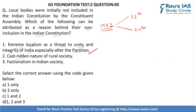Second — caste-ridden nature of rural society — is also correct, as India at that time was deeply entrenched with the caste system, especially in rural areas. Third — factionalism in Indian society — is also correct. For local self-government to be successful, it's very important that all citizens of that area live in unity and harmony, which was not the scenario in the 1950s. Hence, the correct answer is D — 1, 2, and 3.